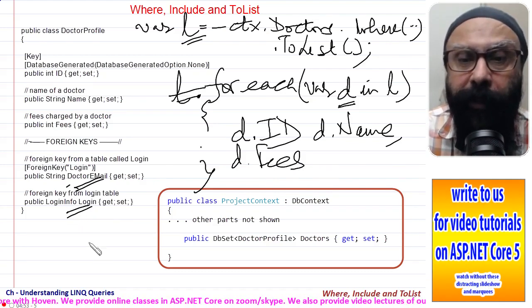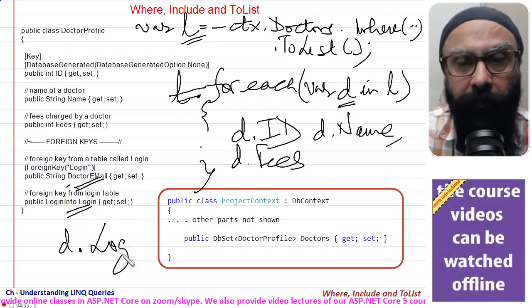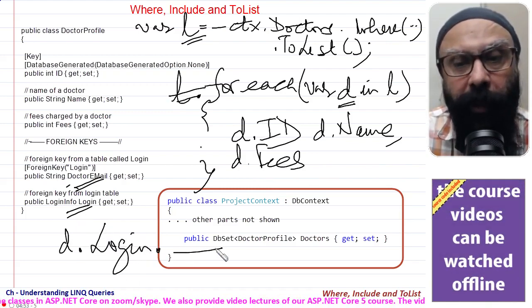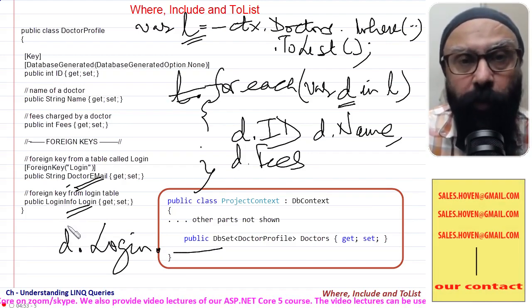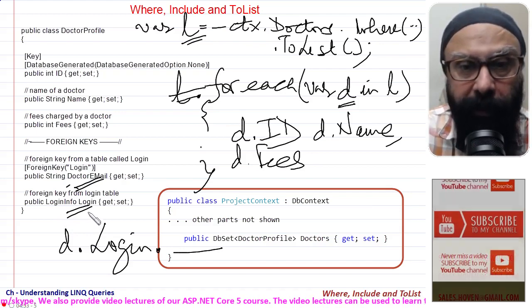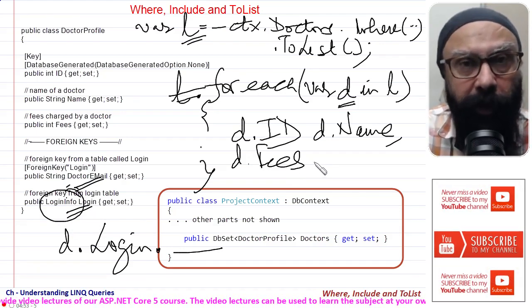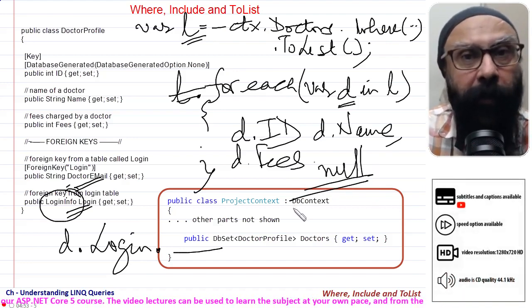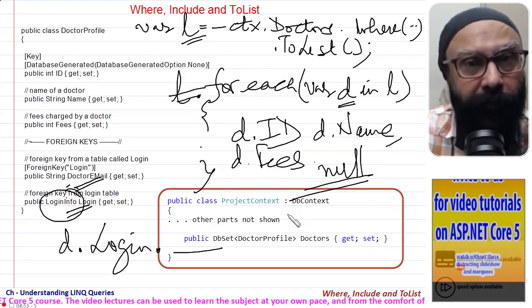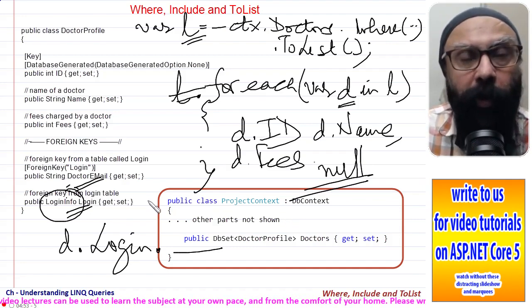But if I try to get this DoctorEmail or these further properties on Login, let us say I try to get d dot Login dot some other property of LoginInfo, that is, if I try to access the related table of this LoginInfo in this foreach, I will get a null. Why is this null? Because EF Core, due to optimizations, will not load all the required...